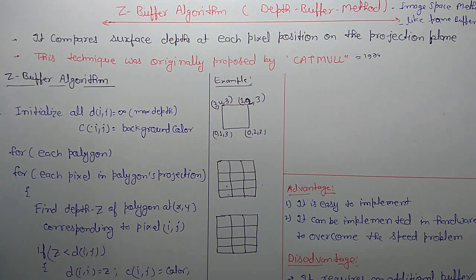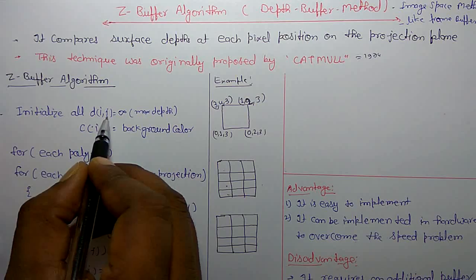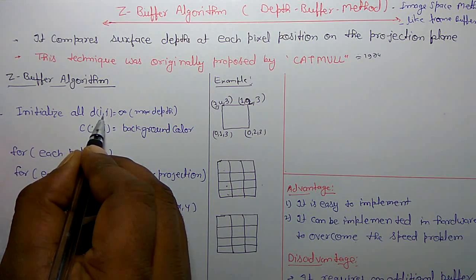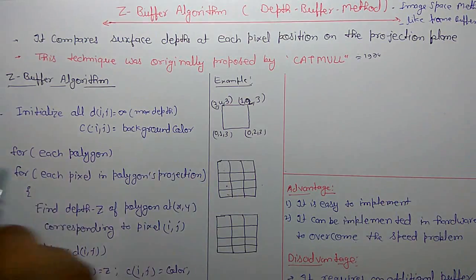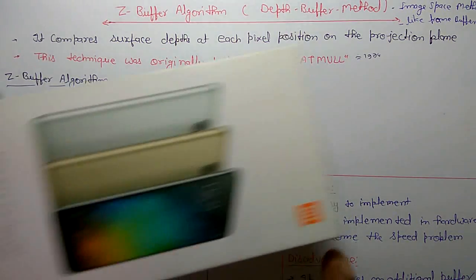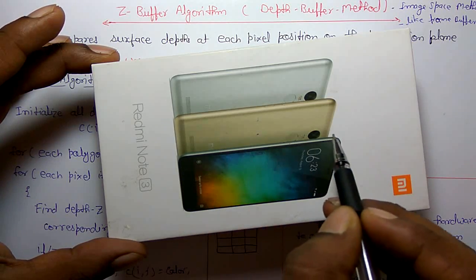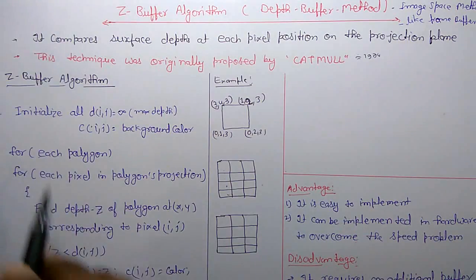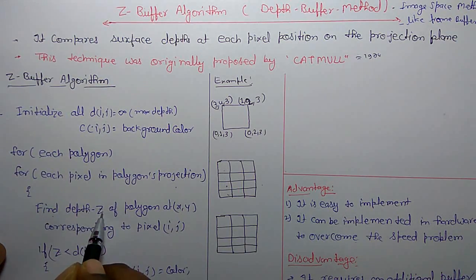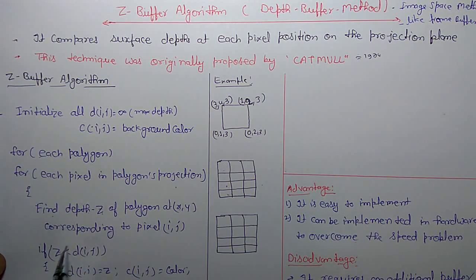The Z-buffer algorithm first initializes the depth of each pixel, assumed as maximum depth — infinite — and each pixel has a corresponding color value. Then for each polygon, we make a loop. For example, in this image there are many polygons. For each polygon we loop, and for each pixel in the polygon's projection, we find the depth Z of the polygon at position x, y.